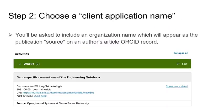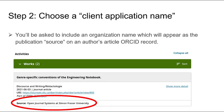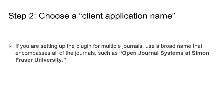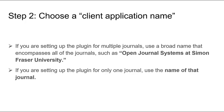The next two steps will help you prepare to complete the application form for the member API. When you complete the form, you'll be asked to include the name of your client application. This will appear as the publication source next to the article information on an author's ORCID record. If you are setting up the plugin for multiple journals, you can use a broad name that encompasses all of the journals, such as Open Journal Systems at Simon Fraser University. If you are setting up the plugin for only one journal, use the name of that journal.